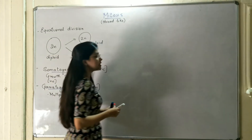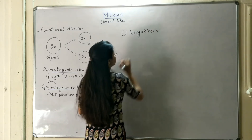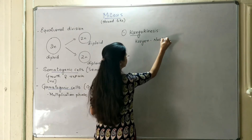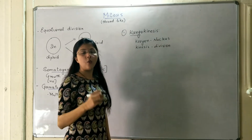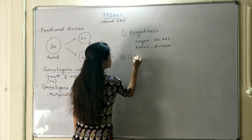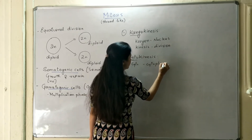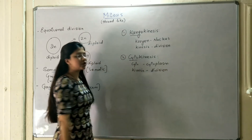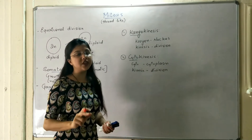The complete process of mitosis is divided into two stages. The first stage is called karyokinesis. The term karyokinesis has two parts: karyon, meaning nucleus, and kinesis, meaning division. So at the initial stage of mitosis, only the nucleus divides — that process is called karyokinesis. The second part is cytokinesis, where cyto means cytoplasm and kinesis means division. So when the cytoplasmic division is taking place, that process is called cytokinesis. Cytokinesis is always followed by karyokinesis during the process of cell division.